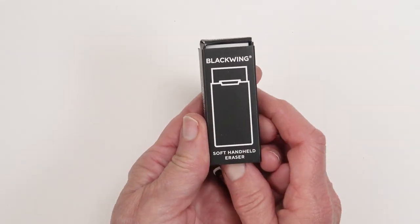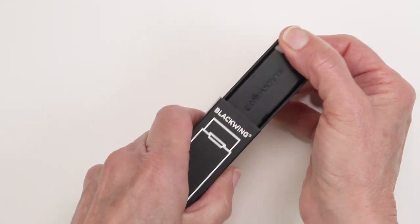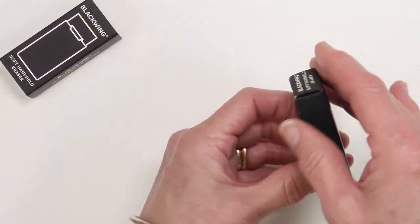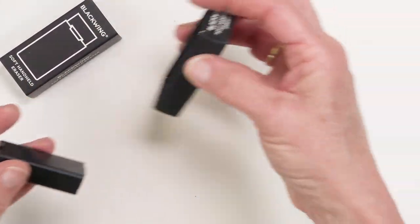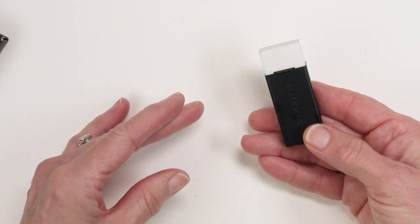It comes in a cute little box that slides open and then you can pull it out and there is your eraser.